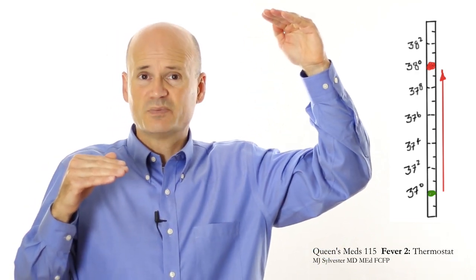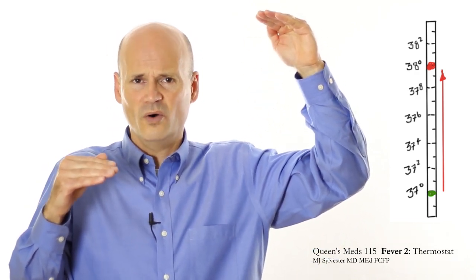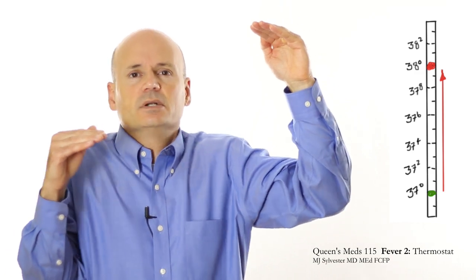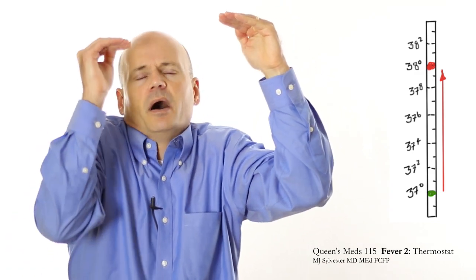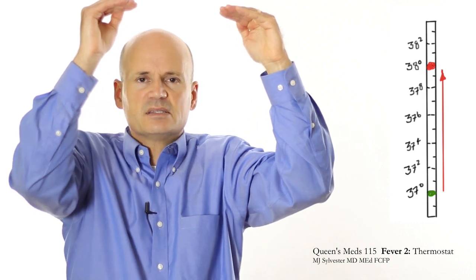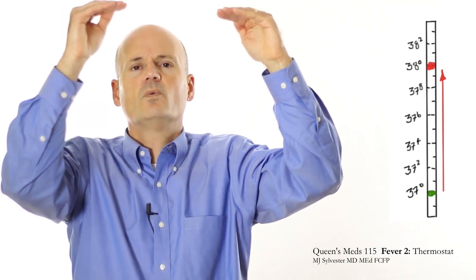So I have an infection. My immune system sends out pyrogens that are influencing the hypothalamus, and the hypothalamus has set the thermostat or the set point higher. My response to that is, I feel cold. I start to shiver. I start to vasoconstrict. And my body temperature goes up until it meets the set point where I feel, oh, I feel warm now.